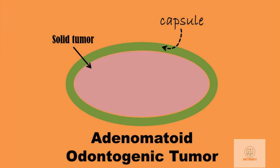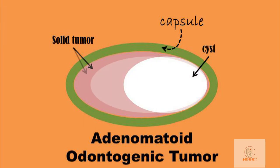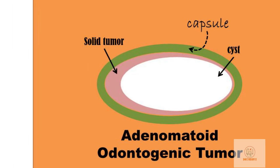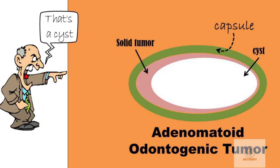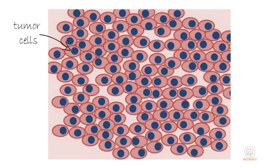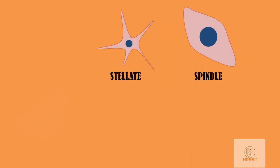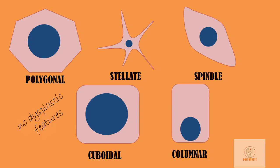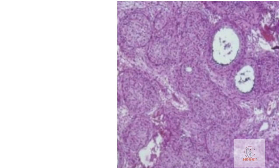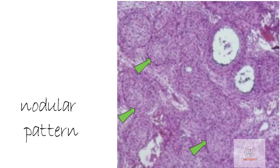Histologically, the tumor is well encapsulated and may be completely solid, partly cystic, or majorly cystic. Due to this, many researchers argue that AOT should be classified as a cyst and not a tumor. AOTs are extremely cellular with less amount of fibrous connective tissue. The epithelial tumor cells may be spindle, stellate, polygonal, cuboidal, or columnar in shape, showing no dysplastic features.